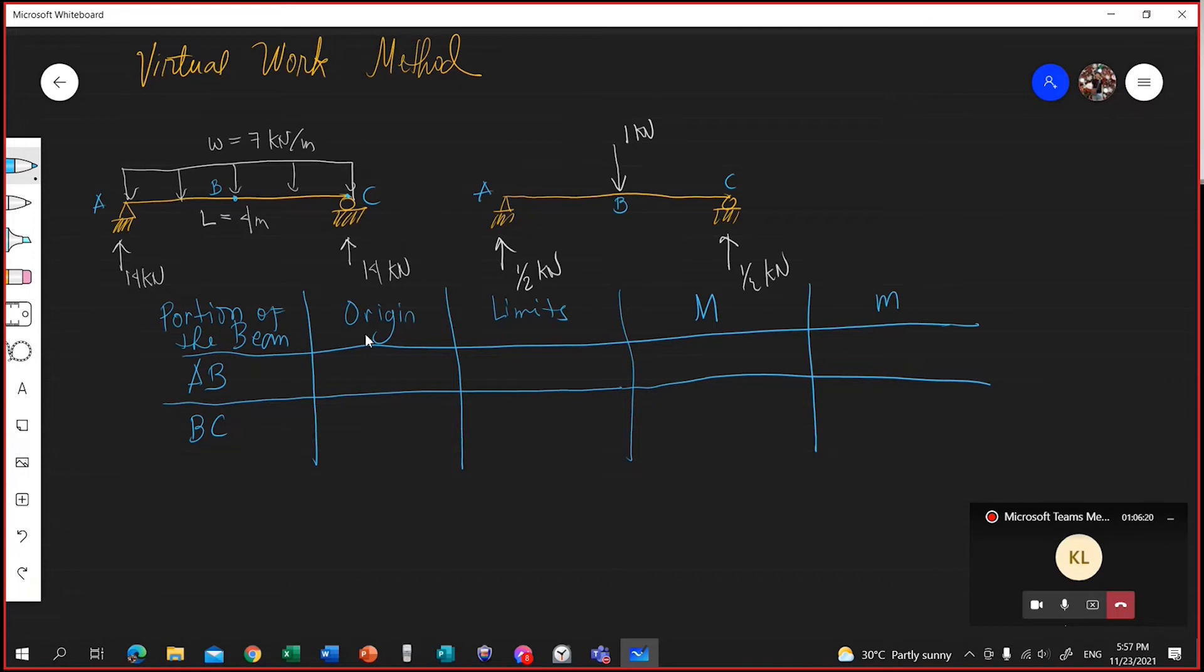Origin is just in relation with the construction of the moment equation. And limit, what is the portion of the beam A-B? What is the limit? From A to B. So the limit is from 0 to 2. That is, if the origin is from A. The limit is dependent on the origin.